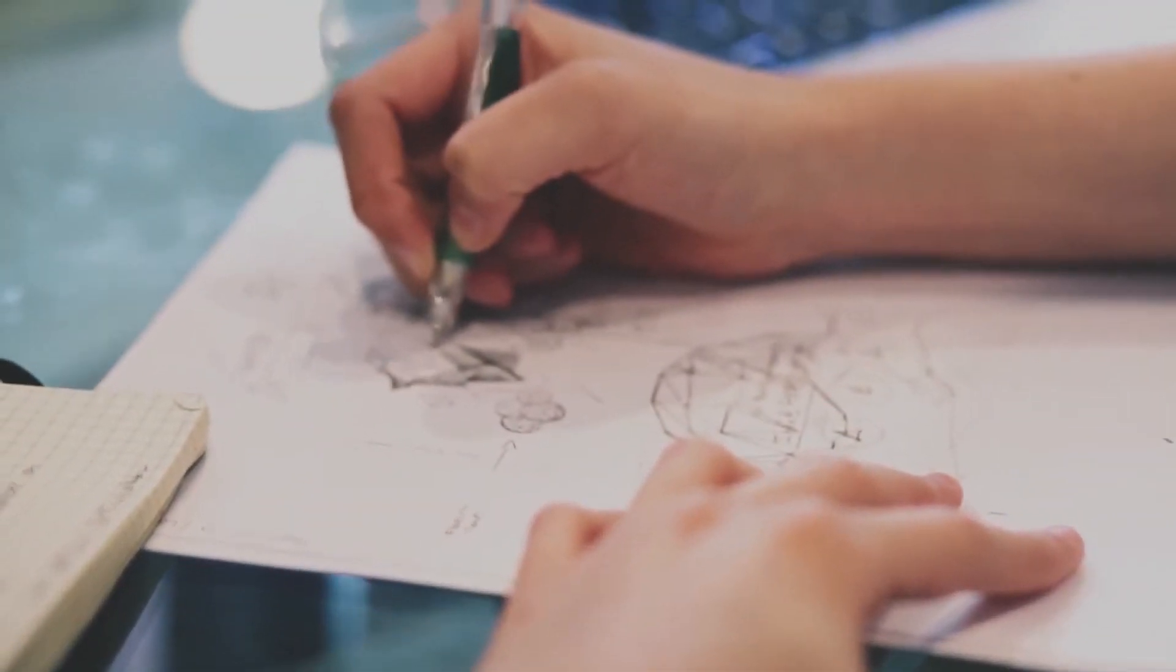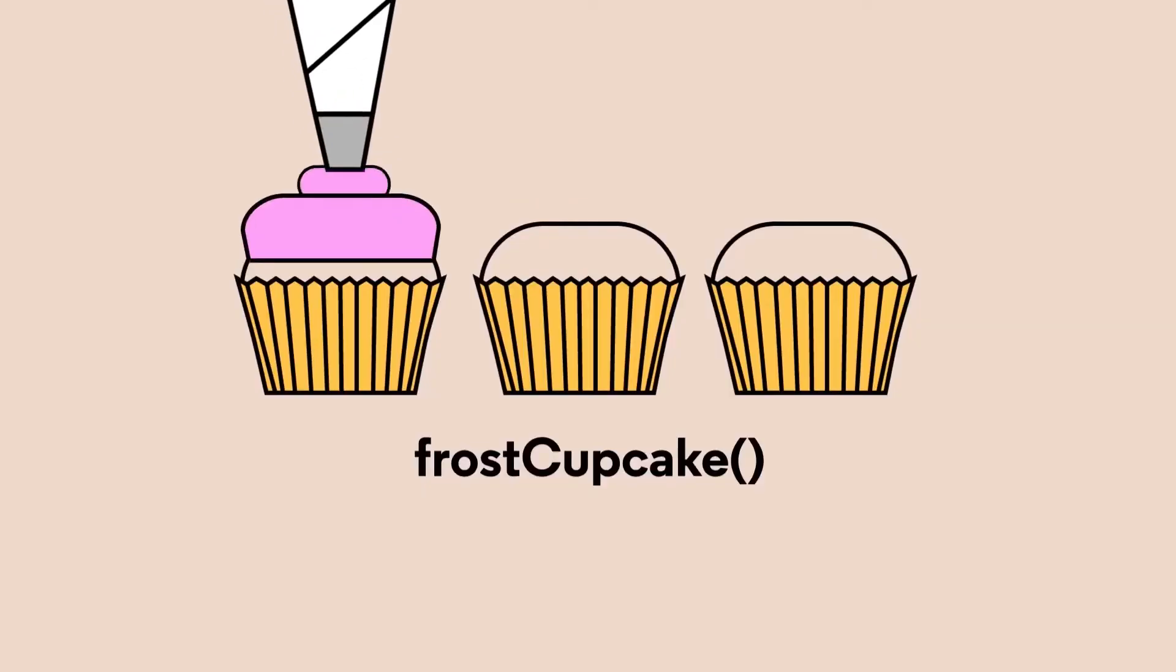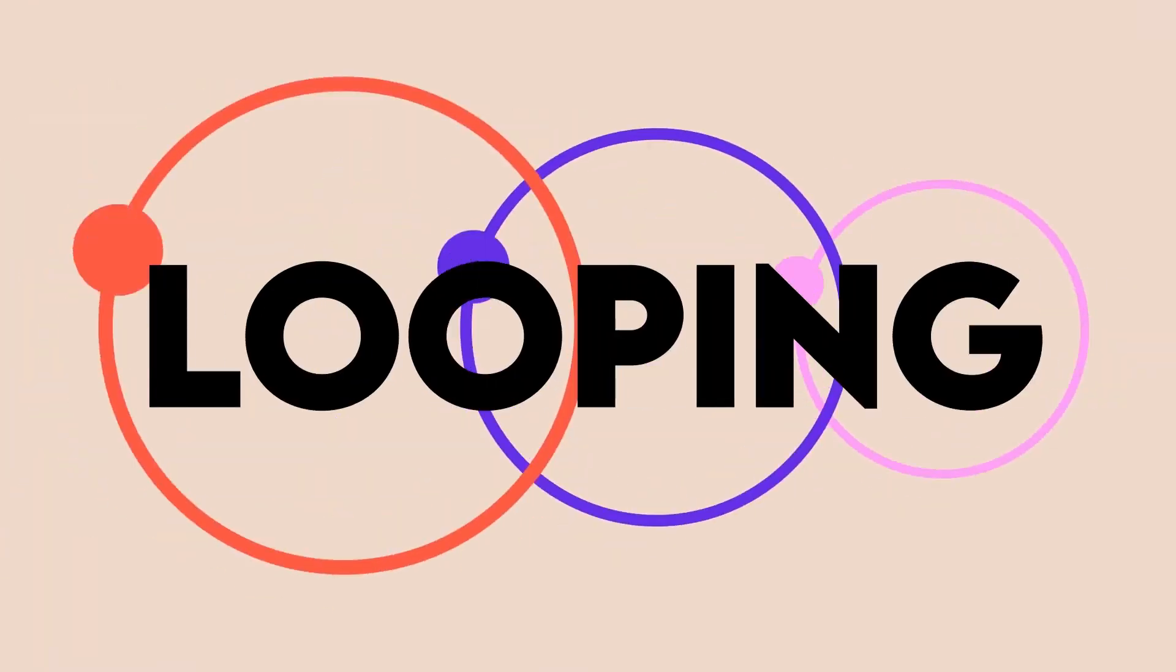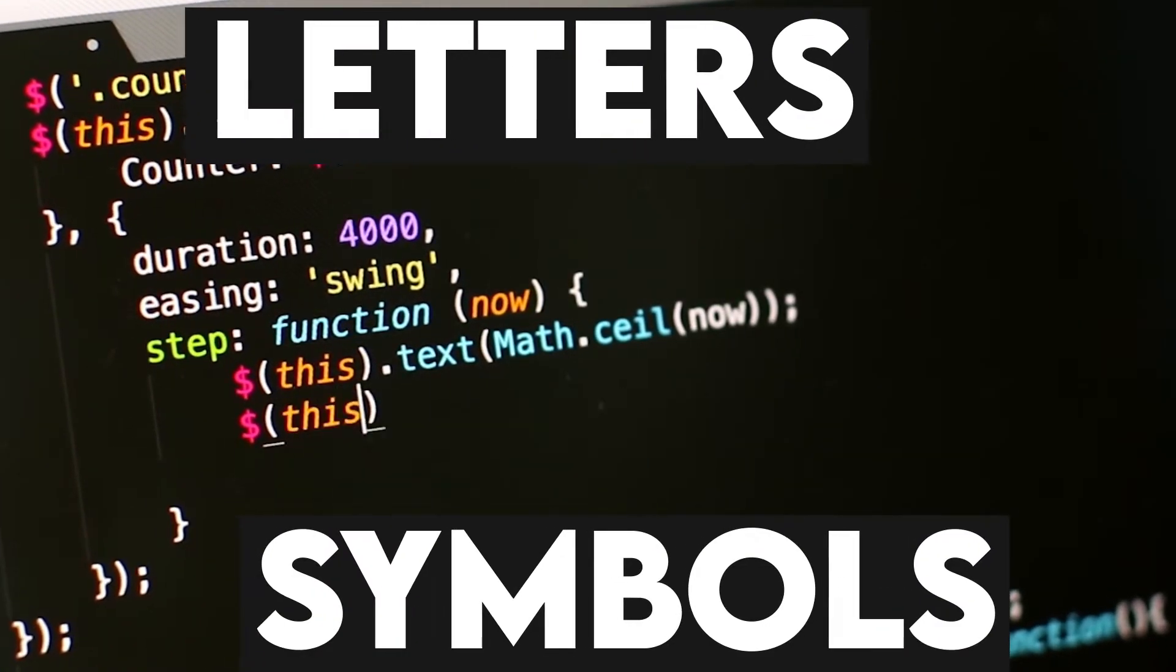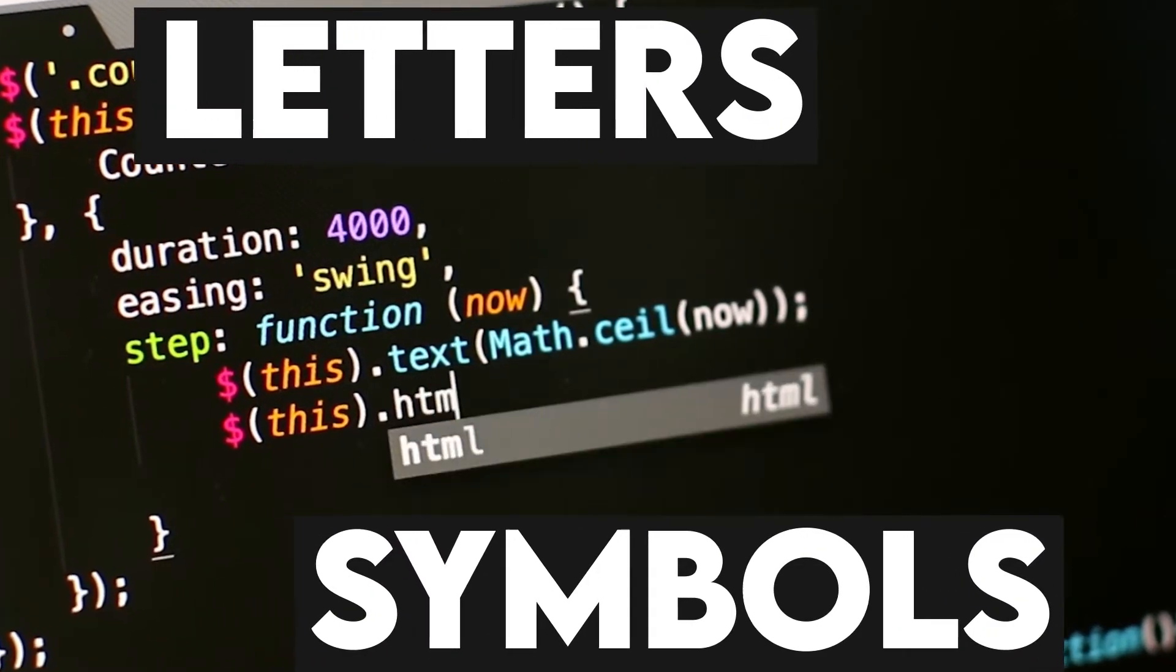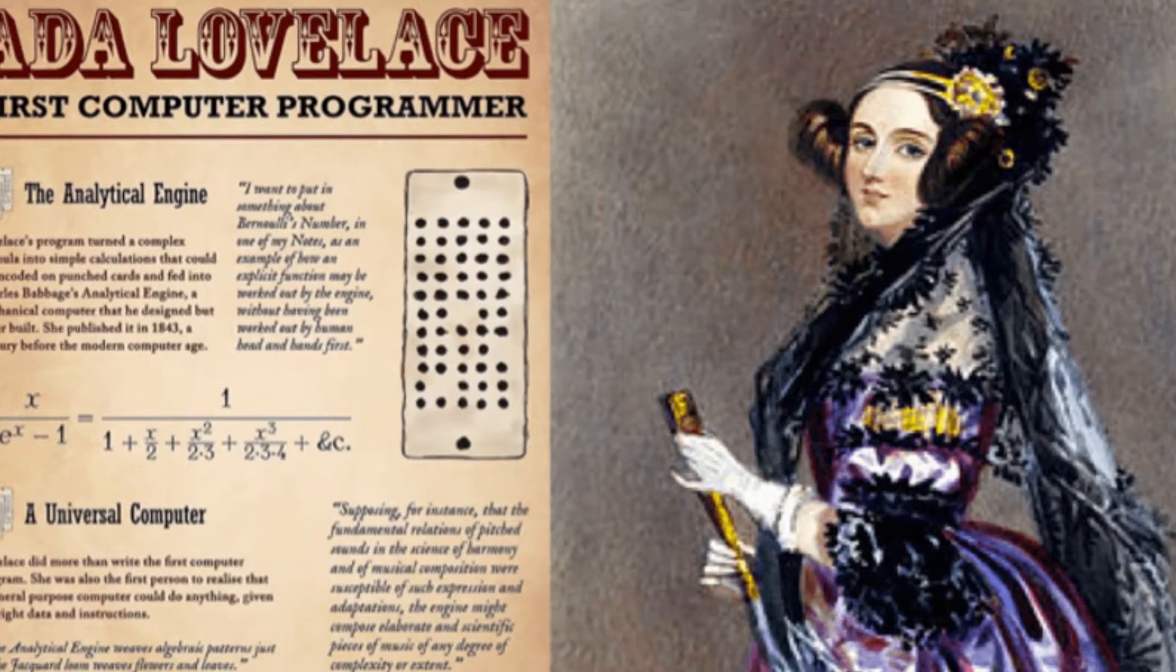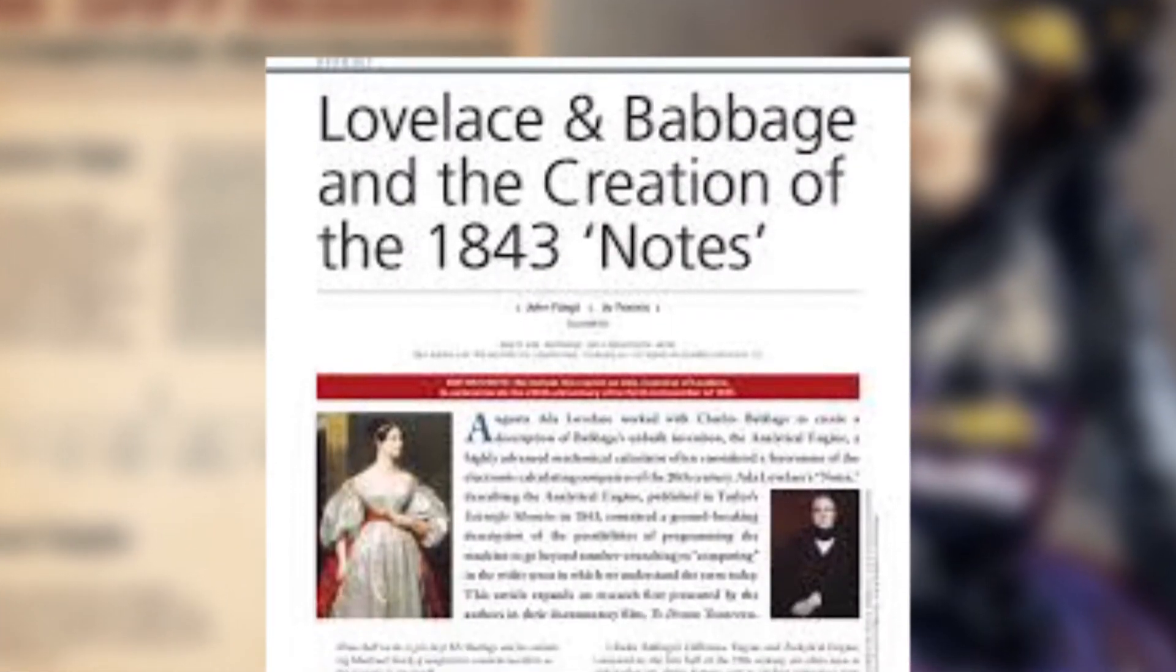She proved it by diagramming the computations that the Analytical Engine would make. She also theorized a method for the engine to repeat a series of instructions, a process known as looping that computer programs use today. Ada noted how the machine could use letters and symbols, not just numbers, to input information. She even gave thoughts on artificial intelligence in her paper. Her work was published in 1843 in an English science journal, earning her fans in Britain's scientific community.